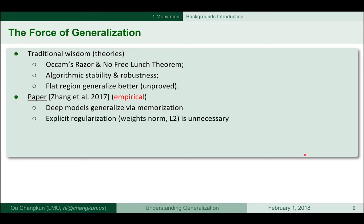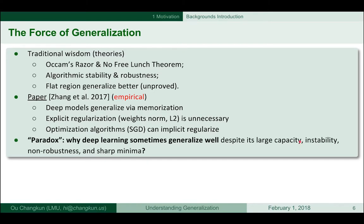Zhang says explicit regularization like L2 normalization is unnecessary. Implicit regularization such as SGD can influence your generalization. Basically, he is saying you should combine model complexity theory and algorithm complexity theory. Comparing these two different traditional wisdoms and Zhang's paper, you can see there is a paradox: why does deep learning sometimes generalize well despite large capacity, instability, non-robustness, or a sharp minimum?